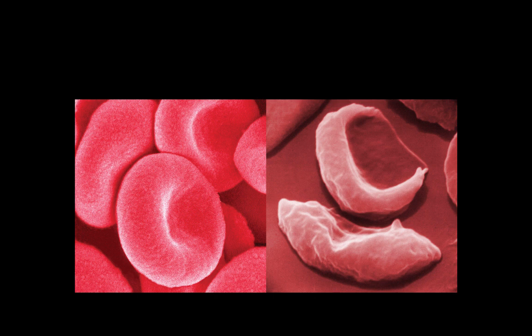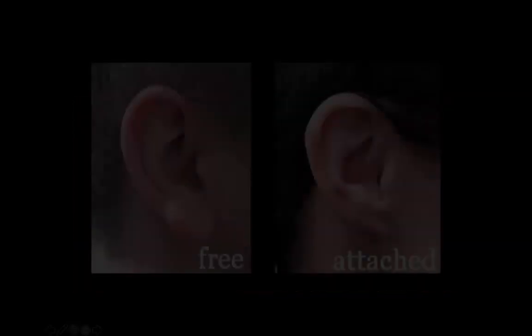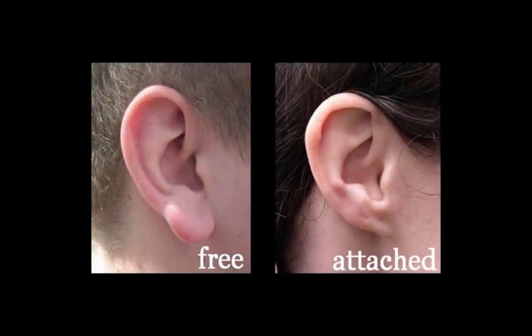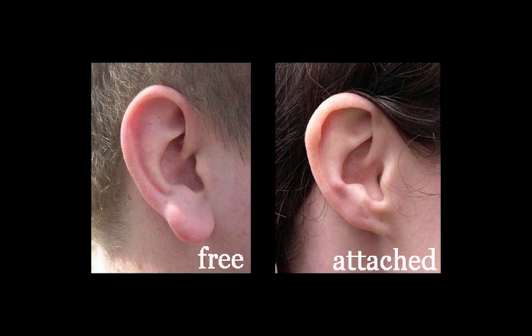An example of a negative mutation is sickle cell anemia, where red blood cells take on a sickle shape and do not carry oxygen well, therefore harming the organism. An example of a neutral mutation is the attached or unattached earlobes of humans. This change is neither beneficial nor detrimental to the species' survival.